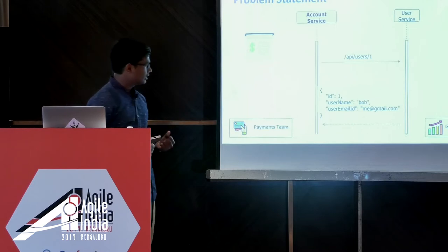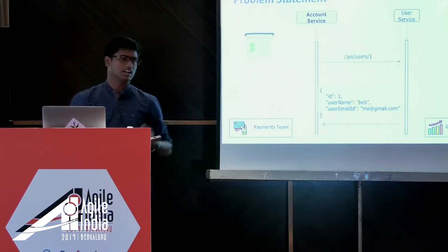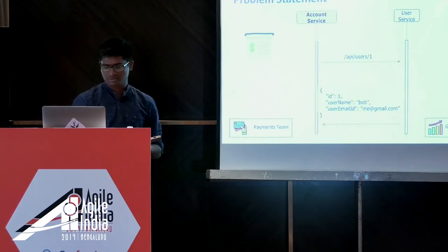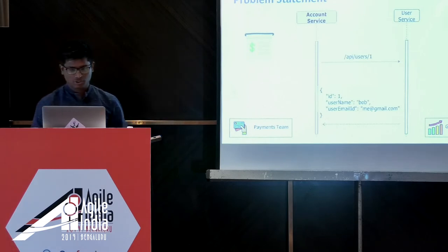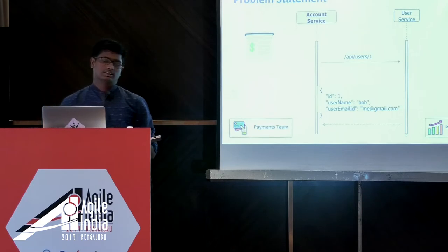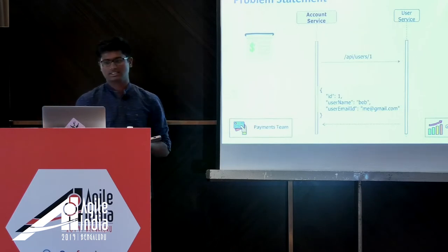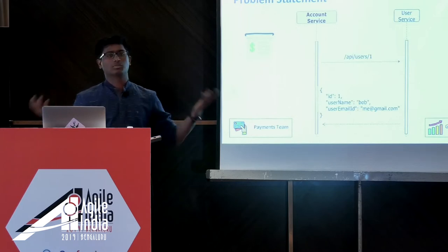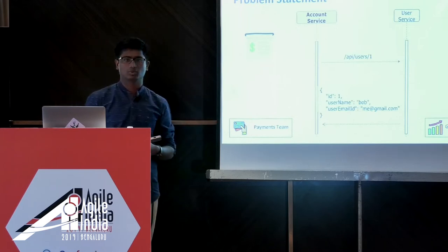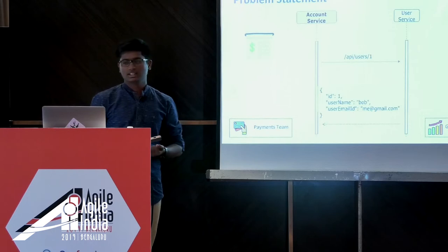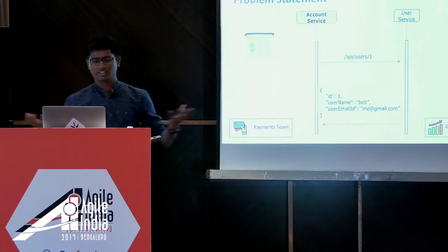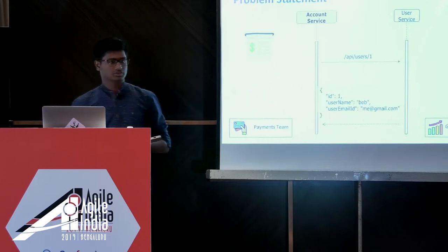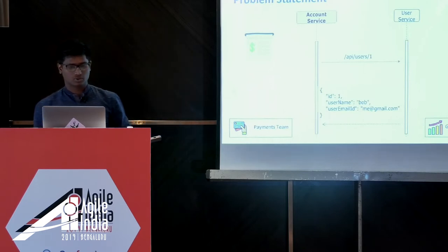Now that we have the vocabulary set up, I will walk you through the classical problem I faced in one of my projects and how we solved it using contract testing. The problem involved an account service and a user service. We had 200-plus microservices in our organization and more than 20 agile teams. These two microservices were owned by different teams — account service by the payments team and user service by the growth team.